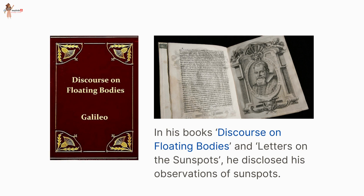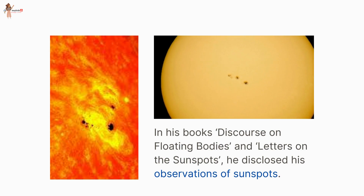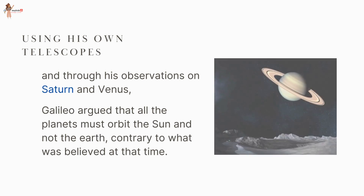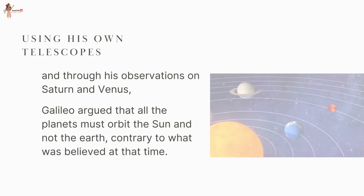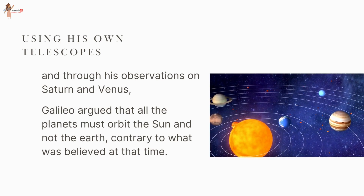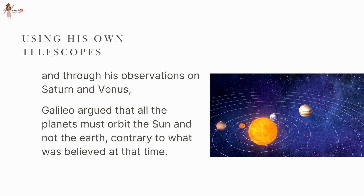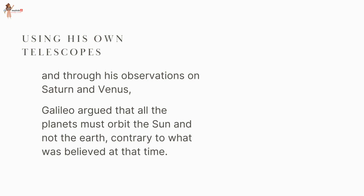In his books 'Discourse on Floating Bodies' and 'Letters on the Sunspots', Galileo disclosed his observations of sunspots using his own telescopes. Through his observations on Saturn and Venus, Galileo argued that all the planets must orbit the Sun and not the Earth — contrary to what was believed at that time.